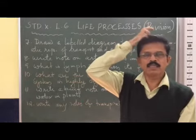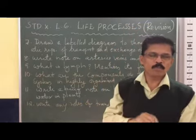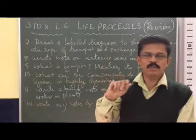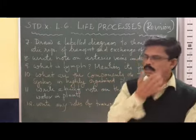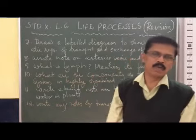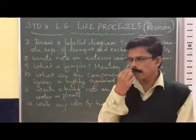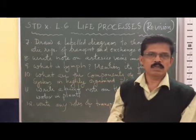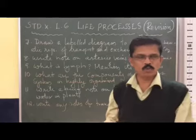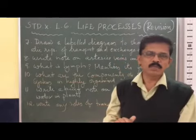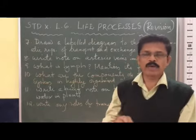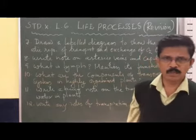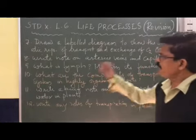The blood moving from the right ventricle goes to the lungs, where the blood is oxygenated by removing carbon dioxide and oxygen mixing with the blood. That oxygenated blood comes to the left atrium, from the left atrium to the left ventricle, and from the left ventricle the blood goes to all body parts. This diagram represents the circulation of blood and the exchange of various gases.